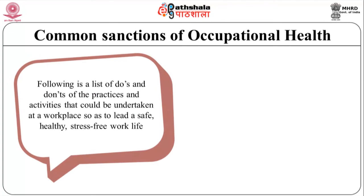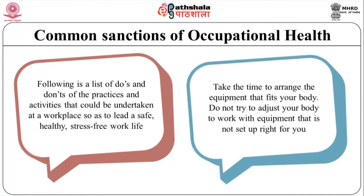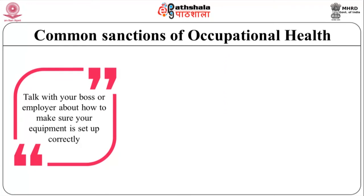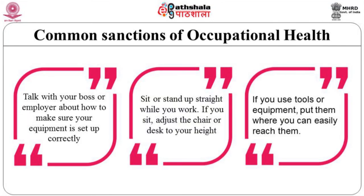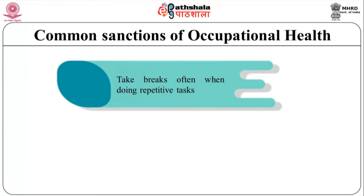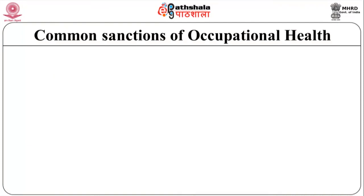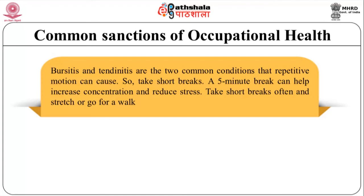Let us have a glance at the common practices of occupational health. Following is a list of do's and don'ts of practices and activities that could be undertaken at a workplace to lead a safe, healthy, stress-free work life. Take time to arrange equipment that fits your body. Do not try to adjust your body to equipment that is not set up right — talk with your employer about correct setup. Sit or stand upright while you work; if you sit, adjust the chair or desk to your height. Put tools where you can easily reach them. Take breaks often when doing repetitive tasks. Warm up and stretch before starting work. Bursitis and tendinitis are two common conditions that repetitive motion can cause, so take short breaks — even a 5-minute break can help increase concentration and reduce stress.